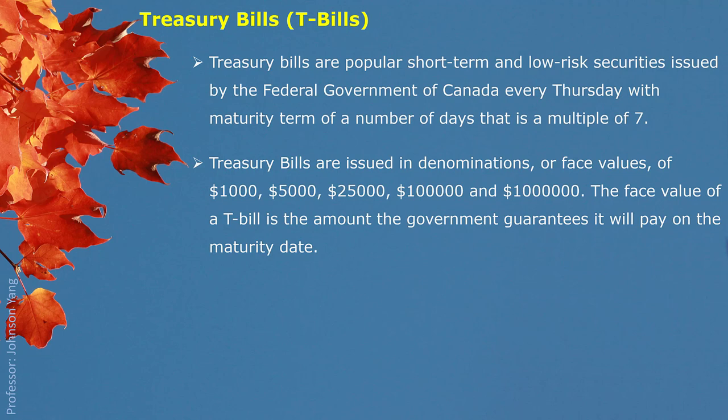That is how much money you can cash in at the end if you are holding a Treasury Bill. So the price for a Treasury Bill would be lower than the face value. The price is calculated based on the market interest rate situation, which is normally called the yield. When the government issues the Treasury Bill, they announce an interest rate yield.